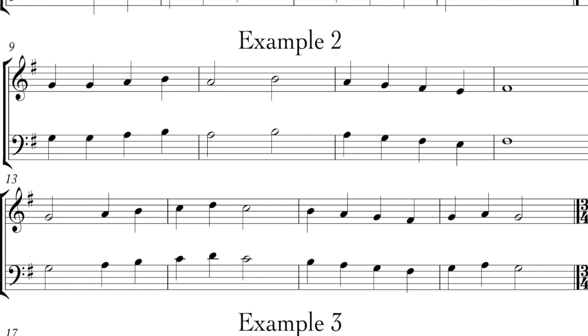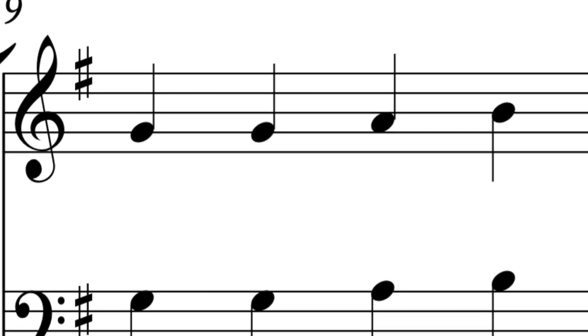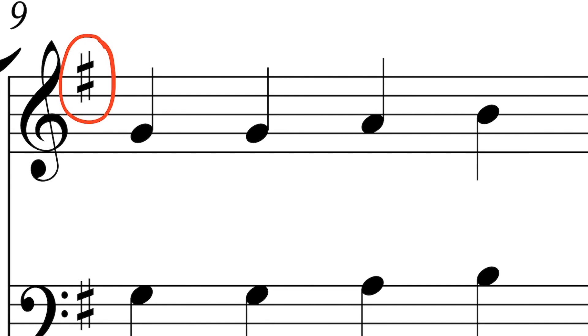All right, for example two we want to take a closer look at the key signature here and we notice we have a sharp. That means we could use the rule the last sharp is ti, which means do is all the way up here, and if you walk it down that means we start on do. So we're starting on do.